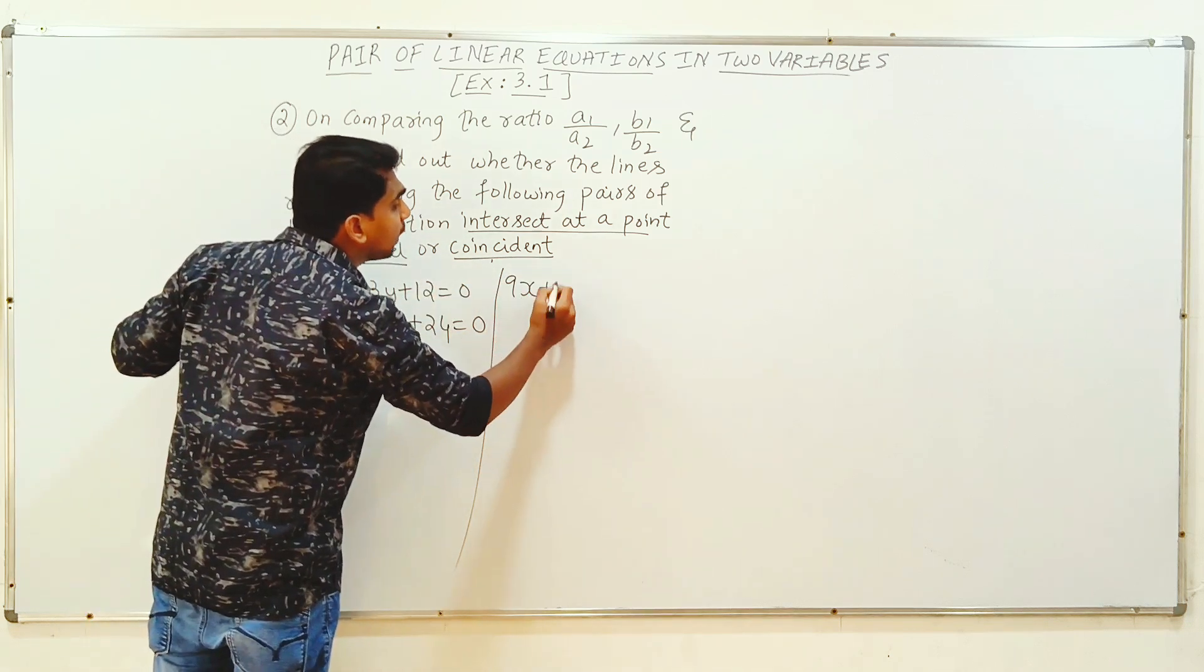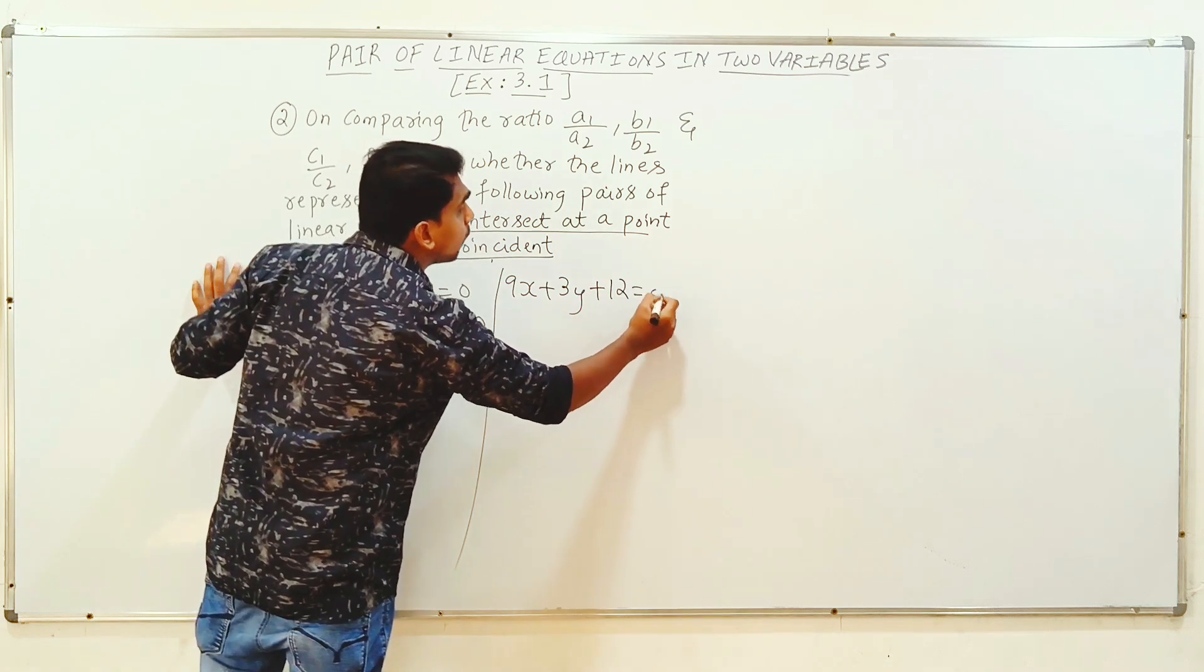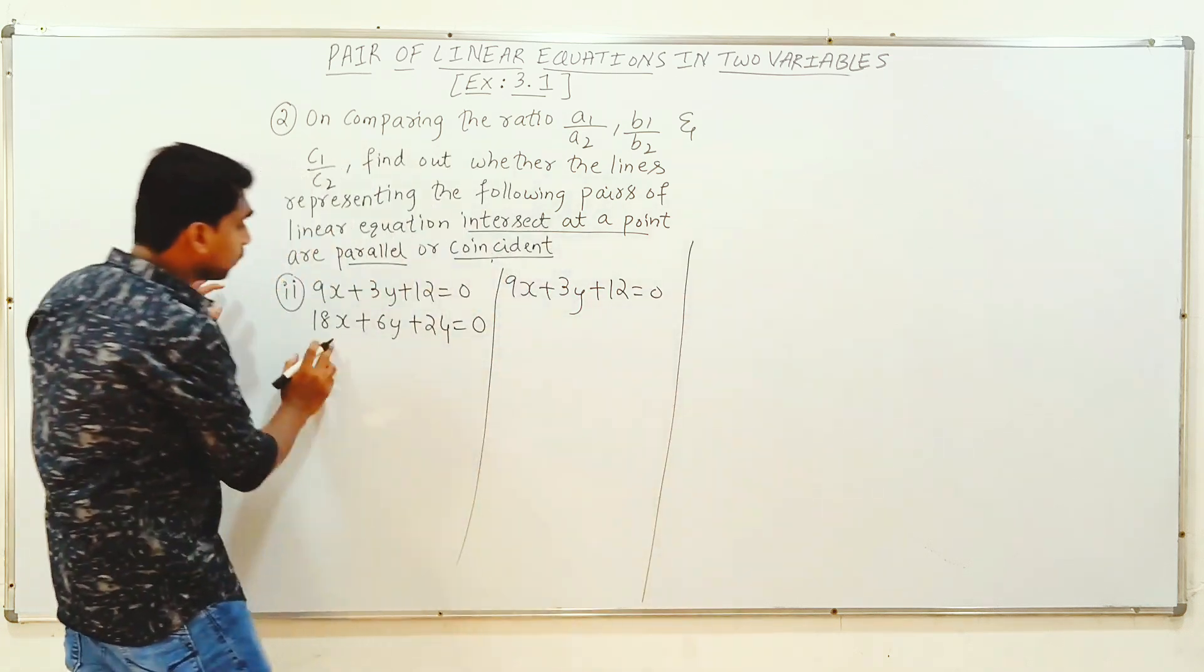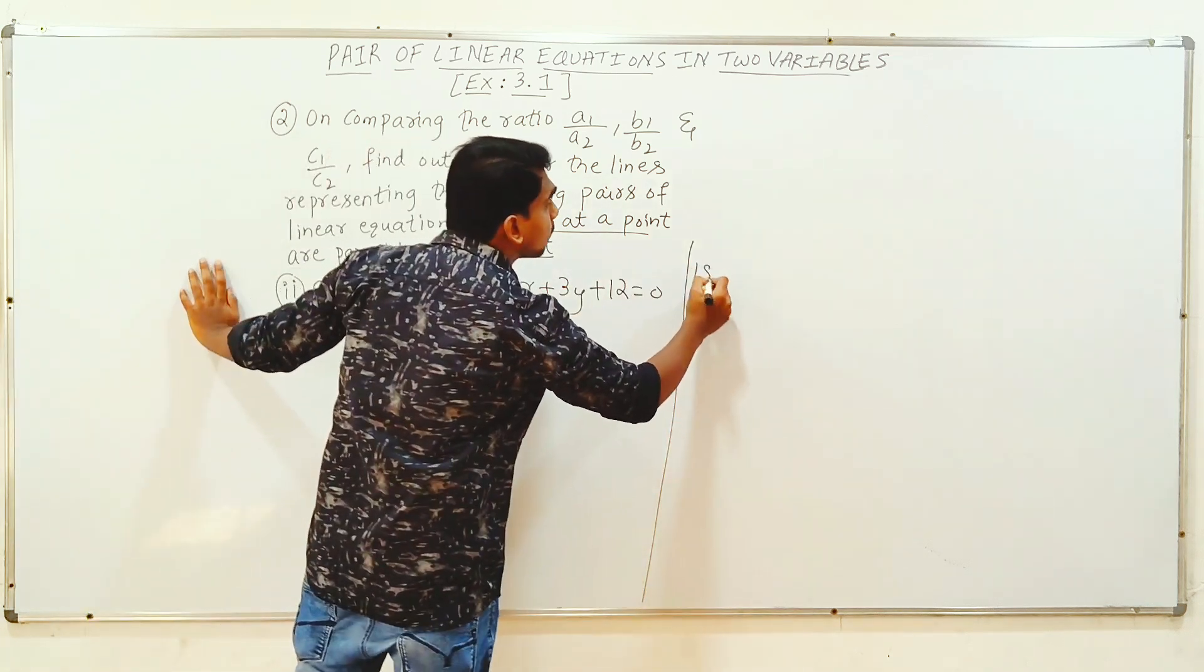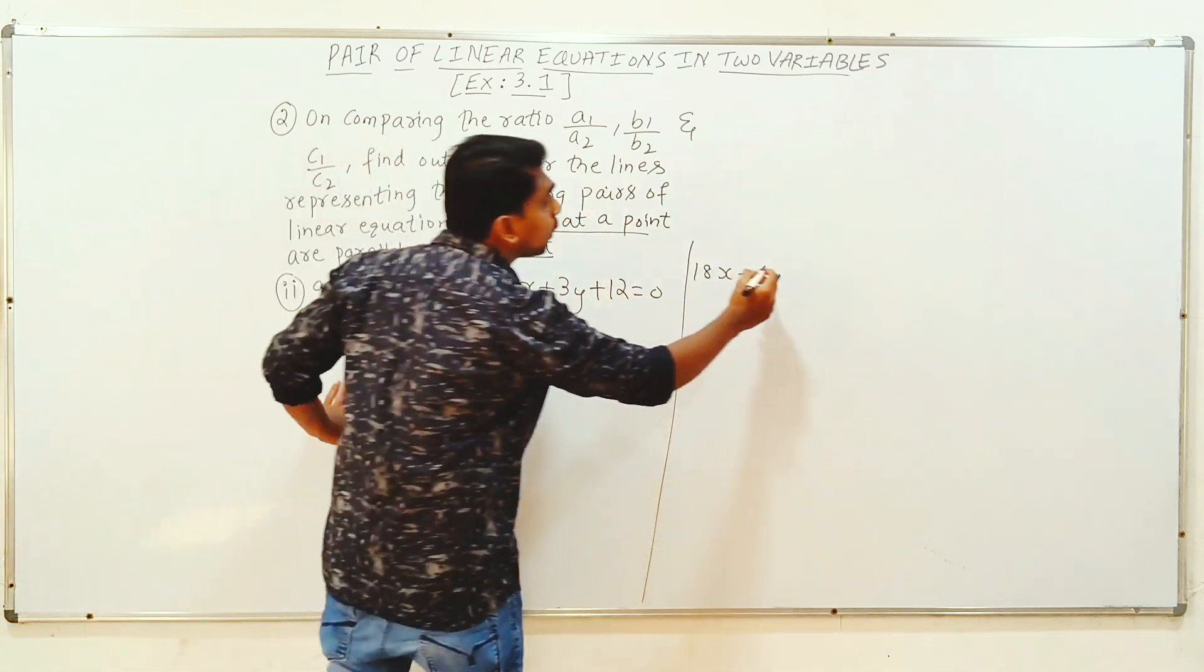Equation 1: 9x plus 3y plus 12 equals 0. Here we have the equation. What is the equation? 18x plus 6y plus 24 equal to 0.